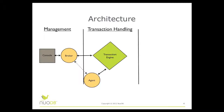Next, the transaction handling tier consists of the transaction engines — the processes that are responding to the SQL requests from your application. The transaction engines store all data in memory, and when there is more than one transaction engine, they will communicate with each other to ensure their data is in sync. Also, the transaction engines are responsible for sending data updates to the storage manager to be written to disk.